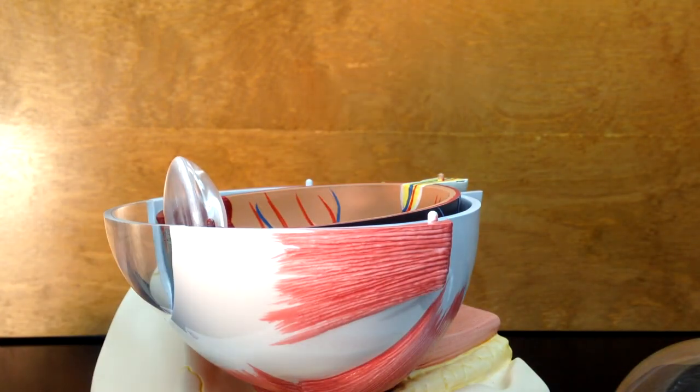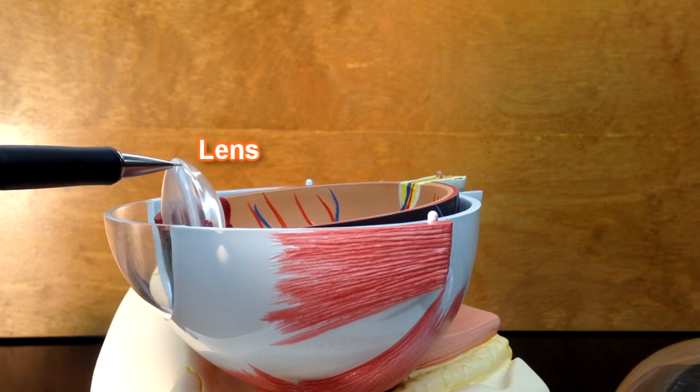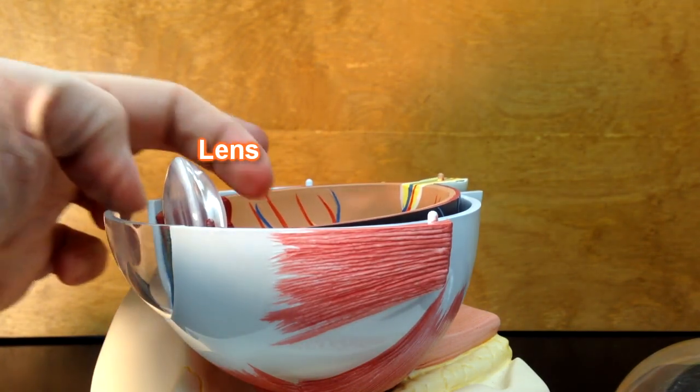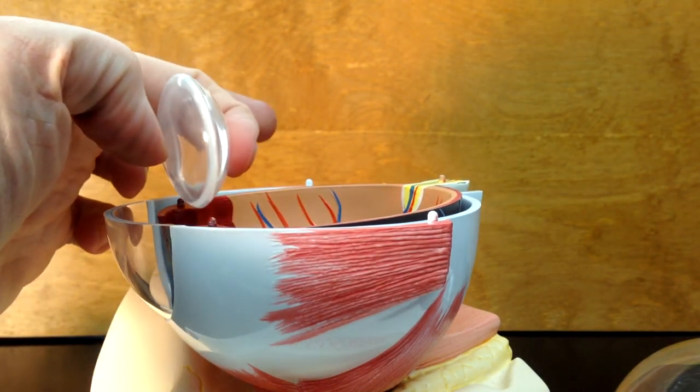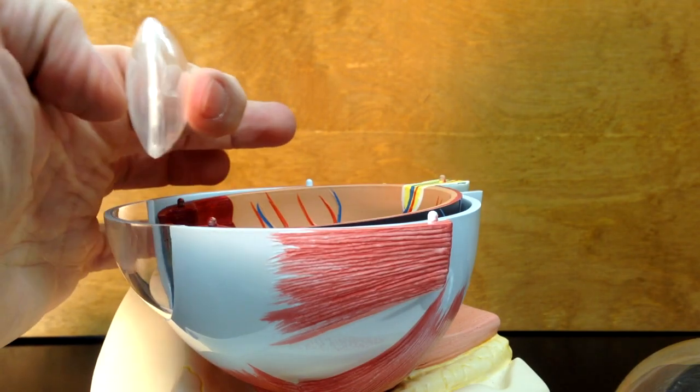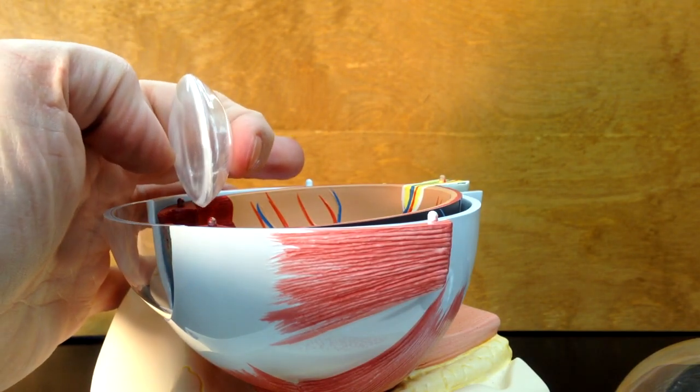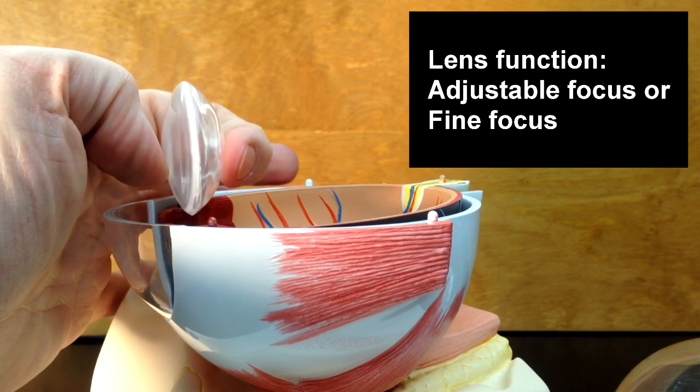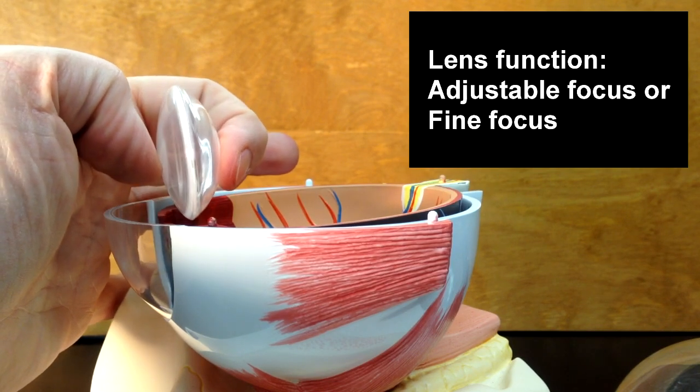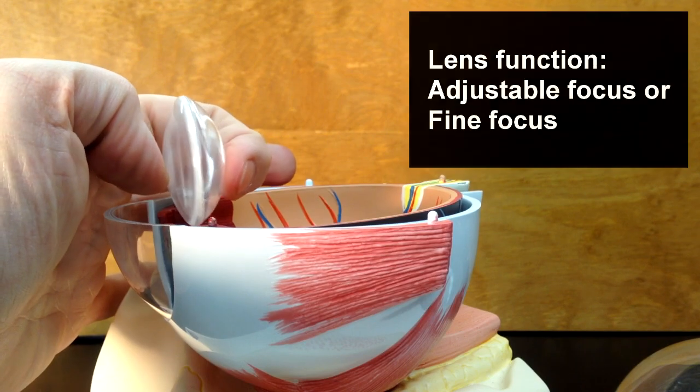We can also see from this vantage point the lens right here. If I were to pick up the lens and show you what it looks like, we would see it here. Now the lens is going to be the fine focus in the eye. This lens is going to be able to change shape. It's flexible.